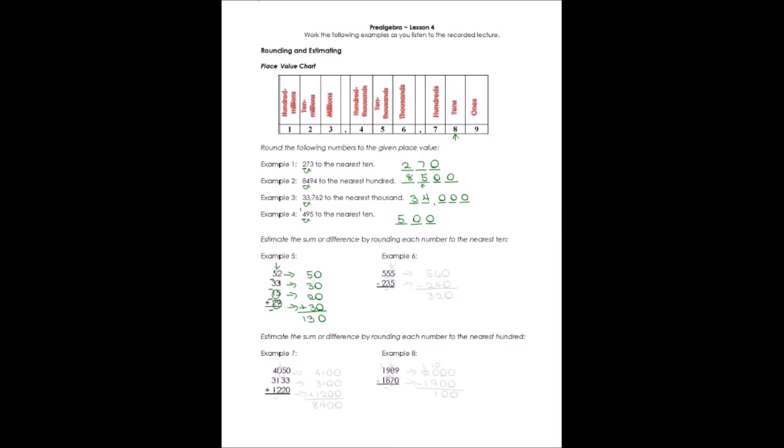What about subtraction in example 6? If we round to the nearest tens place, once again, the digits we're interested in rounding to are in the tens place. And the column that's important to us is the ones place, the one next to it. Which of these are 5 or greater? Both of them are. That means I'm going to have to add 1 each time. My 555 would become 560. My 235 would become 240. When I subtract those two, I say 6 minus 4 is 2. 5 minus 2 is 3. And my estimated answer, 320, is really easy for me to get to.